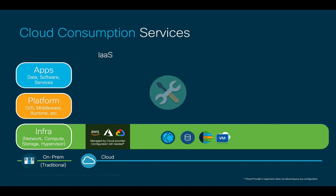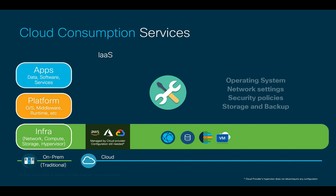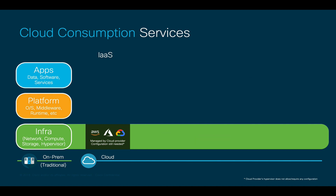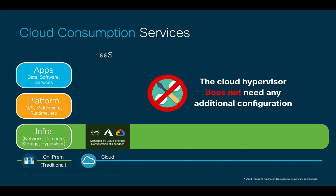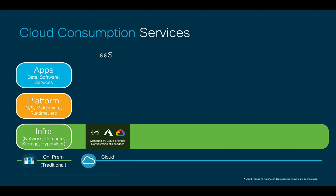However, you still have to configure how you want to use such infrastructure. For example, choosing the operating system to install, the database you want to use, or the network and storage settings you may want. The only piece of infrastructure we do not need to worry about is the hypervisor, since it is entirely managed and configured by the cloud provider. Having network, compute, and storage configured and consumed this way is what we commonly know as Infrastructure as a Service, or IaaS.